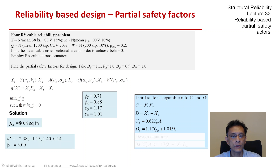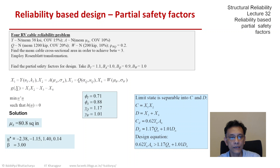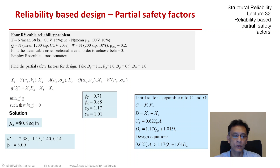If all the algebra is correct, then CD and DD should be equal. The design equation is given in terms of the partial safety factors and the nominal quantities, where the left-hand side has to be at least equal to or greater than the right-hand side. That is the design equation for this four-variable problem, and these factors are tuned to a target reliability index of 3.